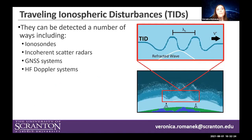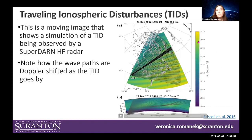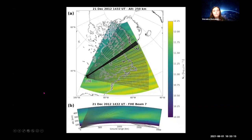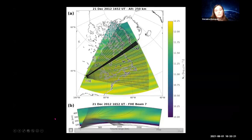TIDs can be detected a number of ways, including ionosondes, incoherent scatter radars, GNSS systems, and high-frequency Doppler systems. Here I have a moving image showing a simulation of a TID being observed by SuperDARN high-frequency radar, generated by Dr. Fussell in his 2016 paper. You can see wave-like patterns of yellow and blue representing the peaks and troughs of the waves, and how radio paths are Doppler-shifted as the TID passes by.